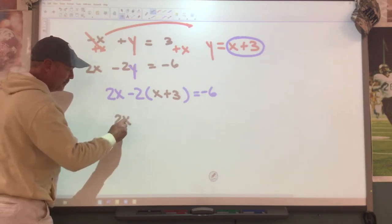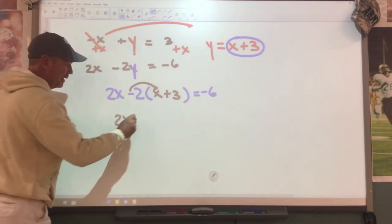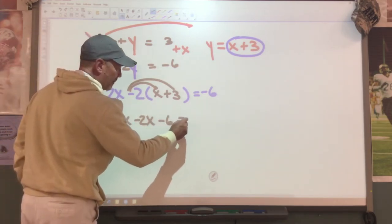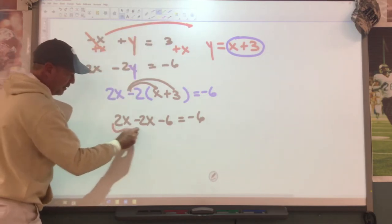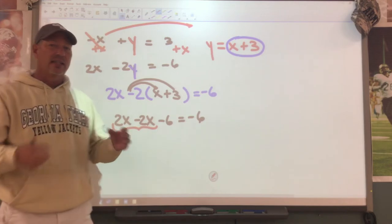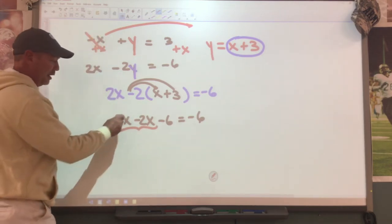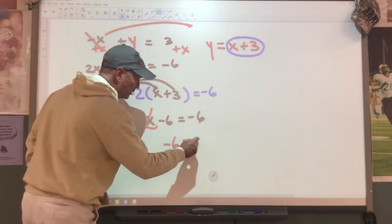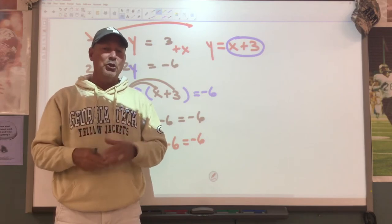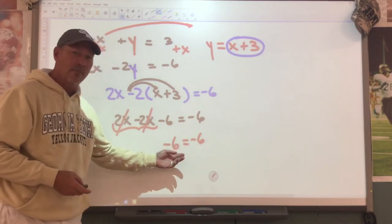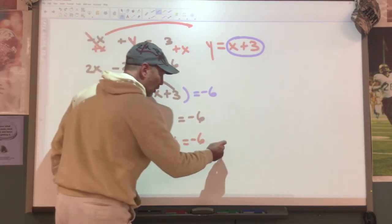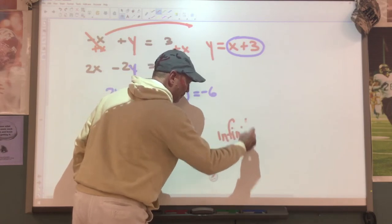We're going to do a little distributive property: 2x, then distribute - negative 2 times x is a negative 2x, and negative 2 times 3 is a negative 6. Now look what happens again - my variables cancel out. I have a positive 2x and a negative 2x; together they cancel. What do I have left? Negative 6 equals negative 6. Remember, when the variables cancel each other out, you have two choices - is this a true statement or a false statement? This is a true statement.